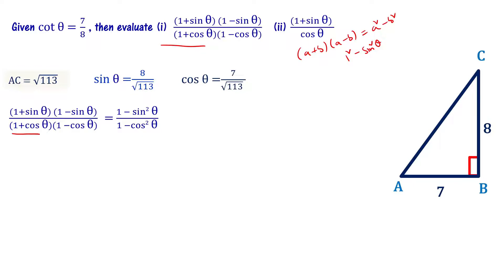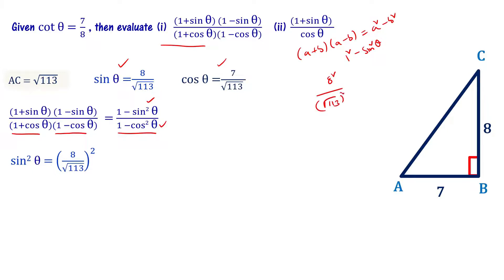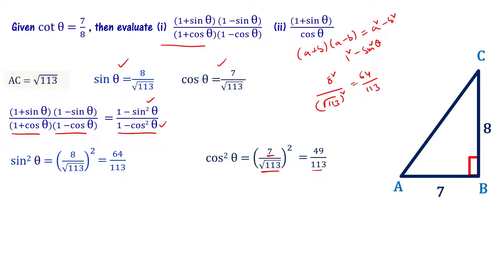The denominator is 1 plus cos theta times 1 minus cos theta, which equals 1 minus cos square theta. To evaluate, we need sin square theta and cos square theta. Sin square theta equals 8 by square root of 113 whole square, which is 64 divided by 113. Cos square theta equals 7 by square root of 113 whole square, which is 49 by 113.